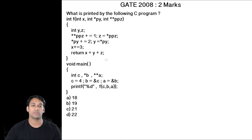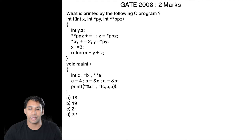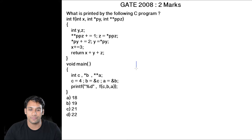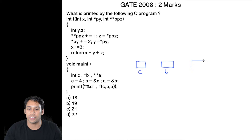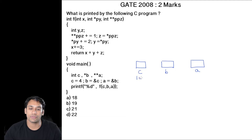Now consider this program. Whenever we execute a program, execution starts from the main function. In this main function, we have three variables: c is an integer variable, b is a pointer pointing to a variable, and a is a pointer pointing to a pointer, which in turn points to a variable. Let us suppose the address of c is 1000, the address of b is 2000, and the address of a is 3000.